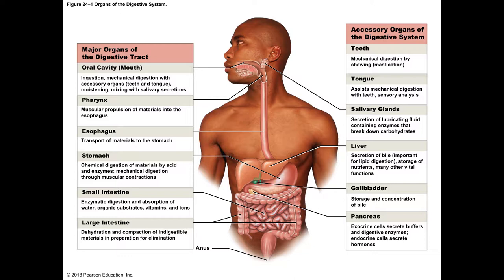The most common monosaccharide that our body uses for energy is glucose. There are other monosaccharides like fructose, but the main one most of our cells use is glucose.